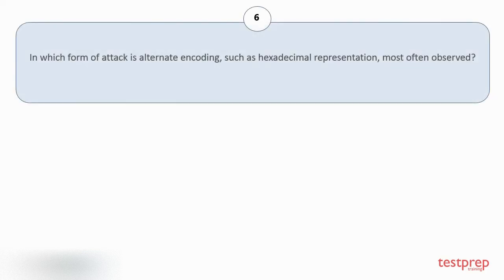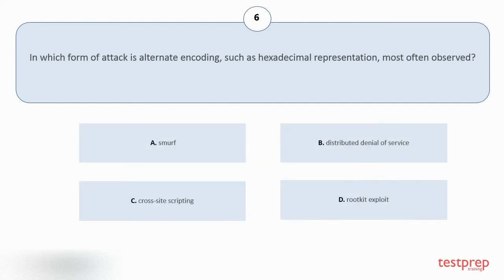Question number 6. In which form of attack is alternating coding, such as hexadecimal representation, most often observed? Your options are: A. Smurf. B. Distributed denial of service. C. Cross-site scripting. D. Root kit exploit. The correct answer is option C.